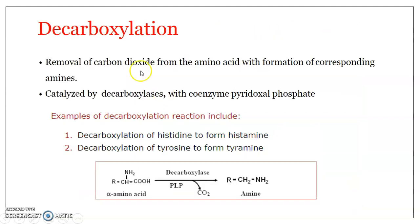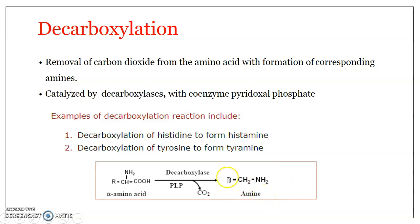Next is the decarboxylation of amino acids. As the name suggests, it is the removal of carbon dioxide from the amino acid with the formation of corresponding biological amines. It is the enzymatic removal of the carboxyl group — the COOH, or alpha carboxyl group — as carbon dioxide. This is very important in the production of biological amines from amino acids. The enzymes involved are decarboxylases, and they require the coenzyme pyridoxal phosphate.